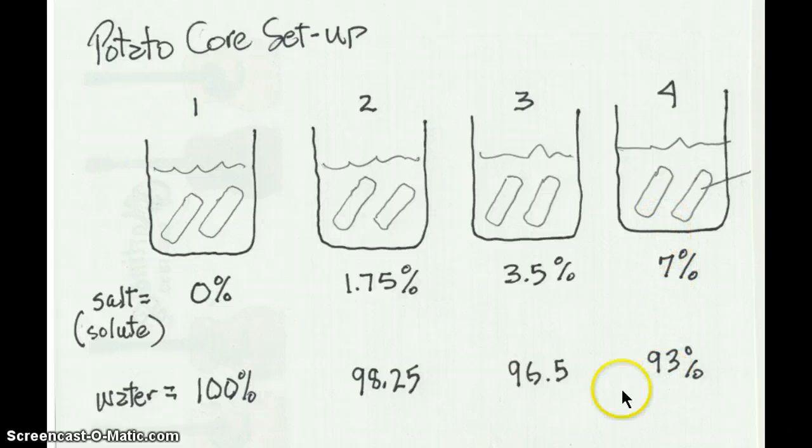Then you have cut some potato cores. You've cut a total of eight cores, as close to 10 millimeters by 10 millimeters by 40 millimeters as possible, so you have a volume of 4,000 cubic millimeters for each of the cores. Now in the data table it asks you to enter what the average volume is for those two. Try and cut them as close as you can to 10 by 10 by 40.